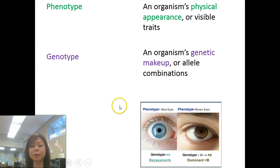Looking at this picture, the phenotype for this person would be blue eyes. The phenotype would be brown eyes. But the genotype would be the letters: lowercase b, lowercase b for this person, or capital B, capital B, or capital B, lowercase b for this person.